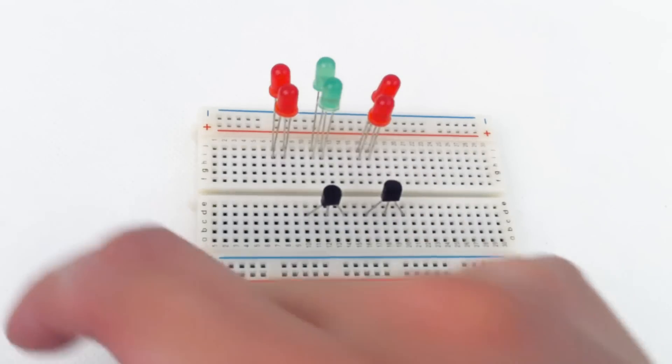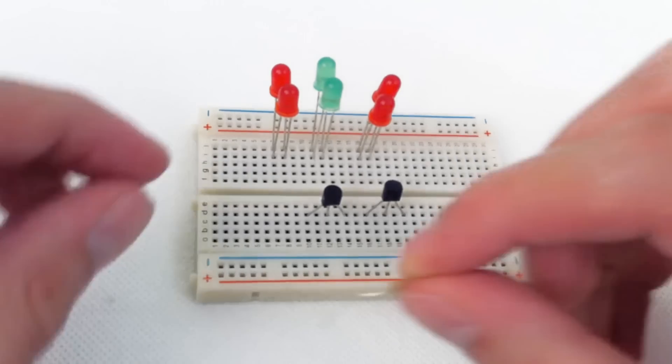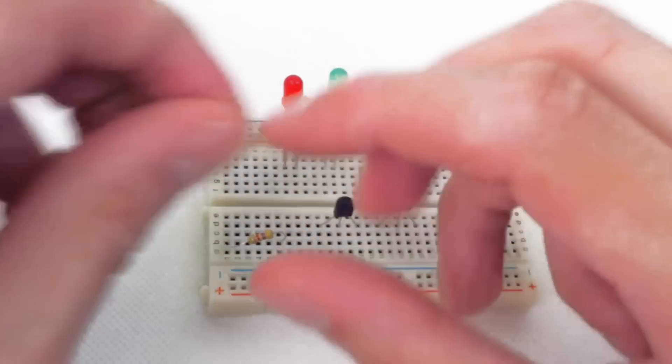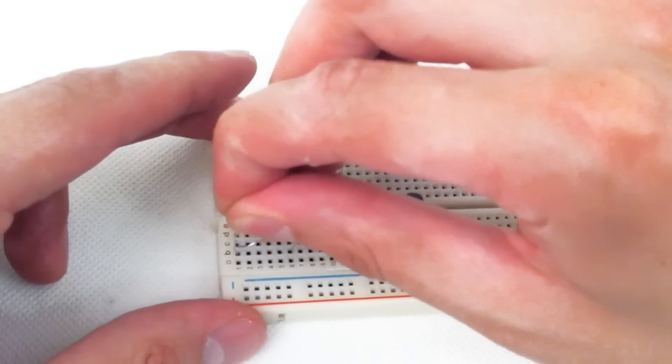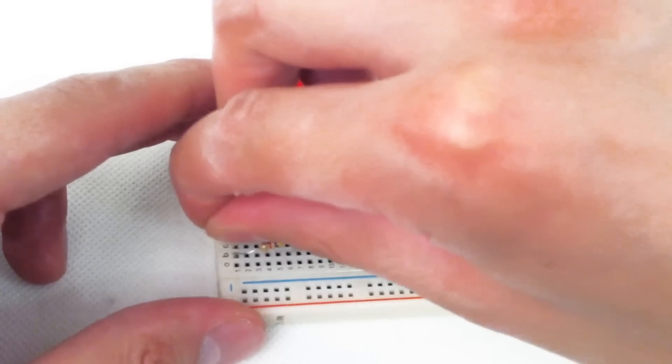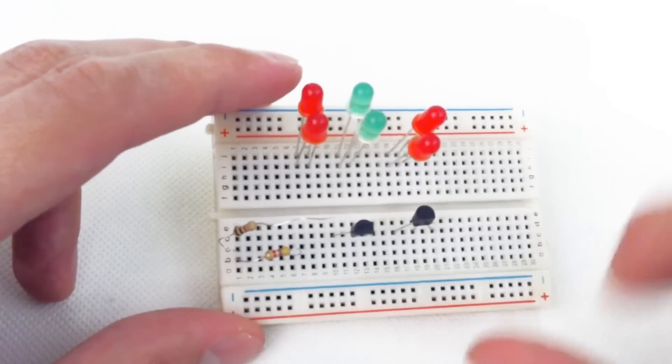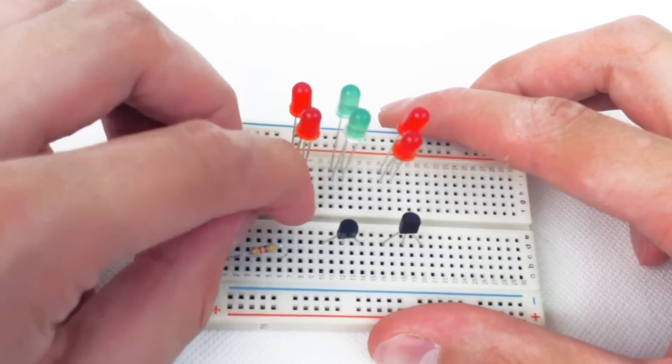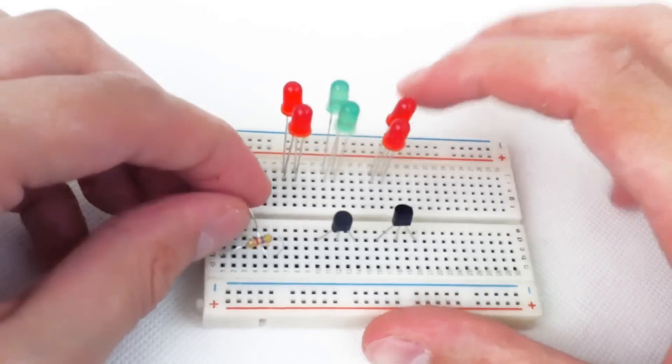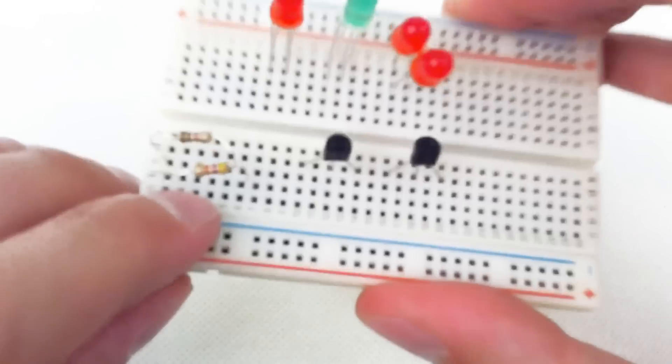Then we have our resistors. So the 4.7K and the 1K - one end slotting in the same end as the 4.7K as you can see, and the other end slotting in the row next to it, not the same row. So they're not connected on one side, not on the other.